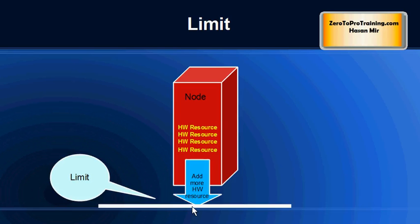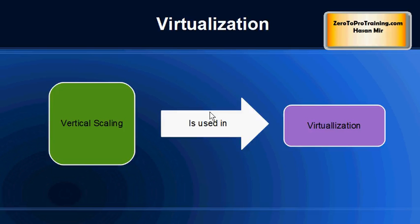You cannot make a single computer more powerful beyond a certain point. This is where the traditional approach of handling big data fails — you cannot buy one or two very powerful computers and expect them to handle a huge amount of data, because the data keeps on increasing. This is where horizontal scaling comes into the picture.